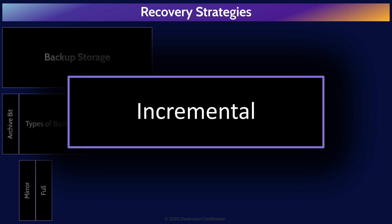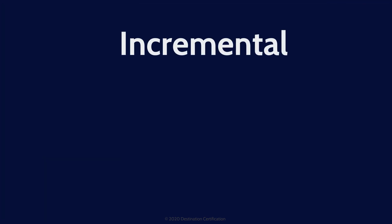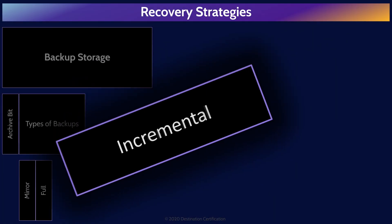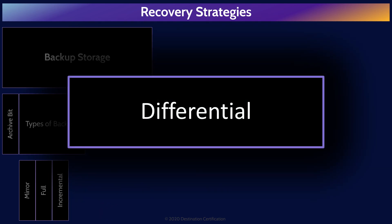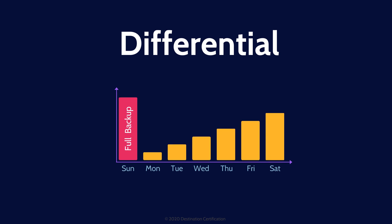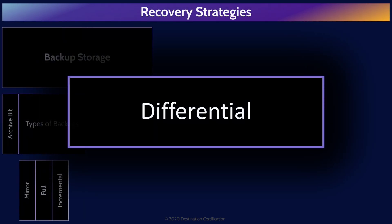Incremental backups are where we back up every change since the last incremental backup. Every time we perform an incremental backup, the archive bit is reset to zero for every file that is backed up, which means you are only backing up files that have been created or modified since the last incremental backup. This minimizes storage space required for backups, but can lead to lengthy recovery times as multiple incremental backup tapes may need to be pulled and run sequentially. Differential backups are where we back up changes since the last full backup. The archive bit is left set to one for every file backed up, which means during every differential backup you are backing up all new and modified files since the last full backup. This uses more storage space, but speeds up recovery times as the maximum number of tapes you will ever need to pull is two — the most recent full backup and the most recent differential tape.